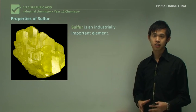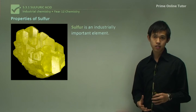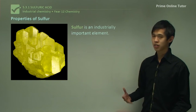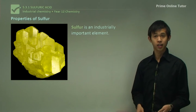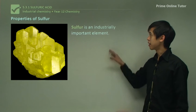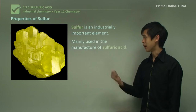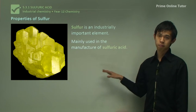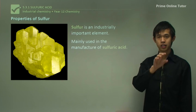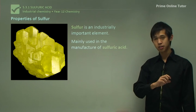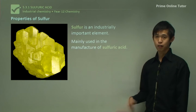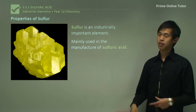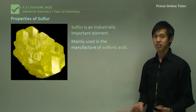To talk about how we extract sulfur, we need to understand the properties we're going to exploit in order to remove it from the ground — we want to use those properties to help us get it out. Sulfur is an industrially important element because it's mainly used in the production of sulfuric acid, which we've seen from the start of year 12 chemistry right through to chemical monitoring and management.